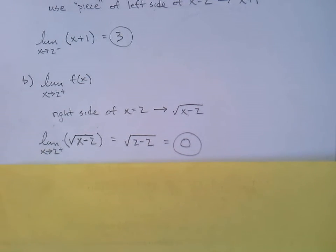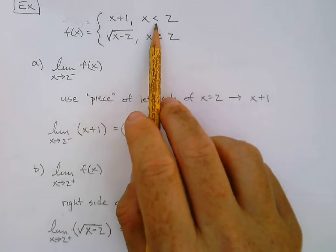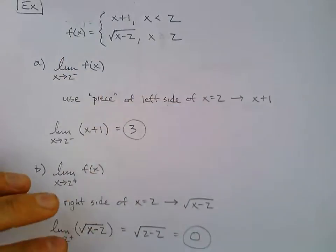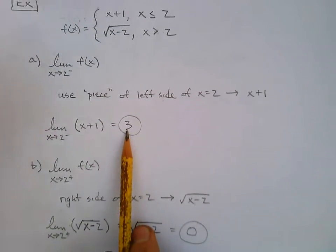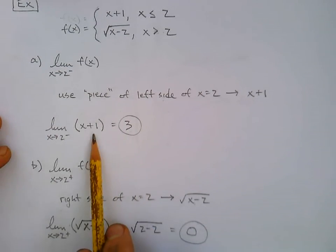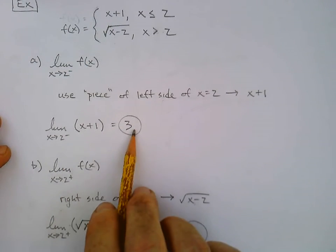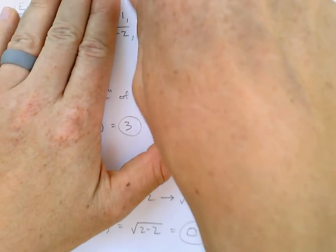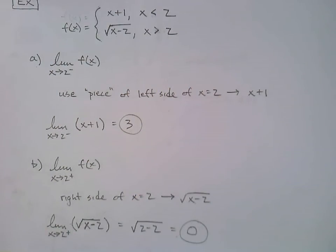Now one other thing to notice is it did not matter that there was an or equals here and there wasn't here. The approach is the same, right? So if I was to go back and just for the sake of argument, if I was to switch it and put the equal sign there, would that change either answer? Well no, the answer here would still be 3 and this would still be zero. Because it doesn't matter what happens when I get to 2, it's only the approaching. So I can still plug in, and these answers 3 and zero would still be the same even if I switch. What if I go another step and I don't have an or equals to either one of them? What if they're both just less than, greater than?